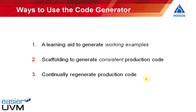The third and most ambitious option is to continually regenerate the production code. That's possible if you make clever use of include files to include user-defined code within the generated code, and if necessary either modify the code generator script or add further post-processing scripts to modify the generated code. If you make smart use of include files and scripts, it should be possible to continually regenerate the production code throughout your project.